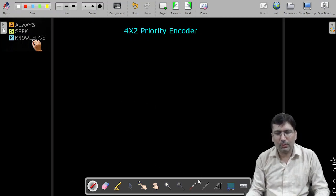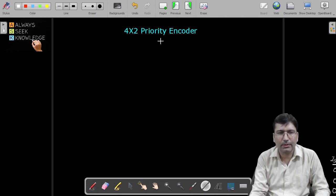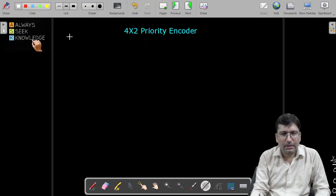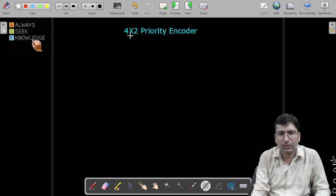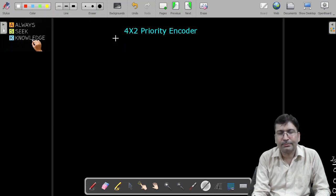Hello everyone, I welcome you all to this lecture. In this lecture we are going to discuss 4 cross 2 priority encoder. Let's try to understand what is priority encoder. In my previous lecture I have discussed 4 cross 2 encoder in which we have four inputs and it will generate two output lines.